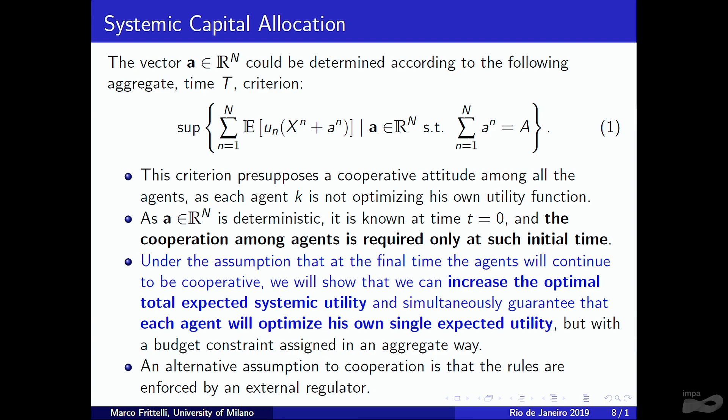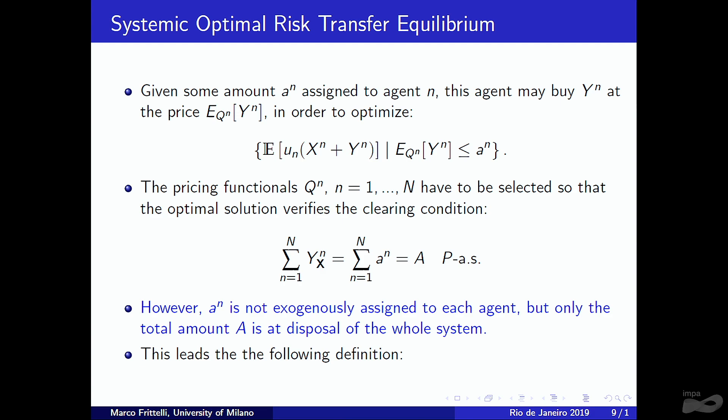The approach I present conjugates risk exchange equilibrium and systemic capital allocation: we increase the optimal expected utility by using random allocation while guaranteeing each agent behaves rationally, maximizing their own expected utility. An alternative is that these rules are enforced by a regulator. Let me now introduce the SORTE concept intuitively.